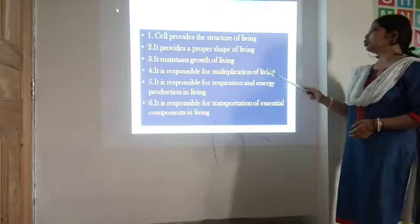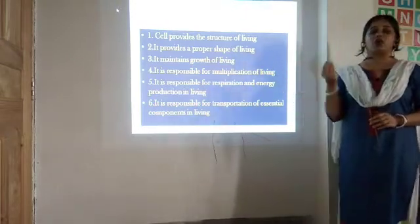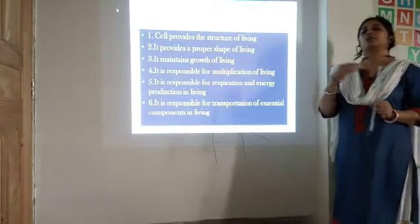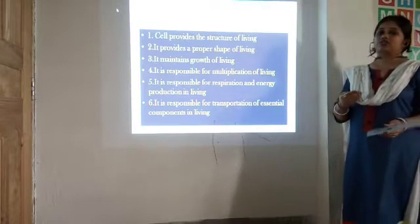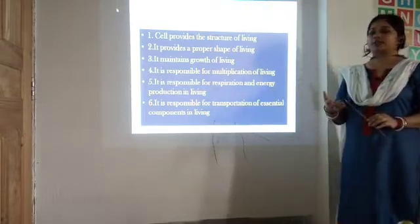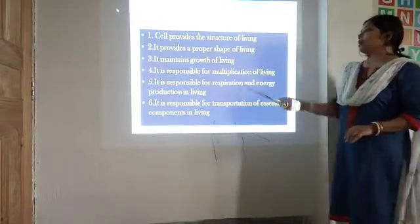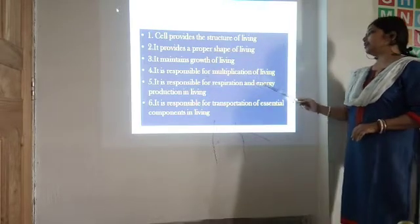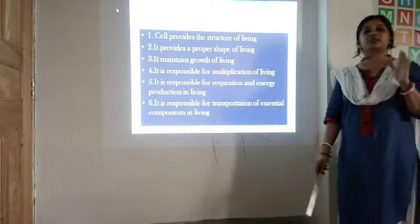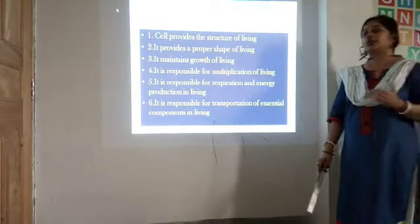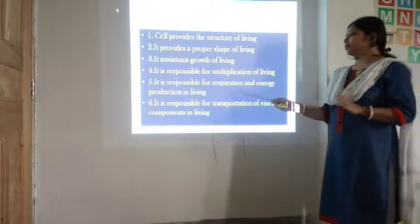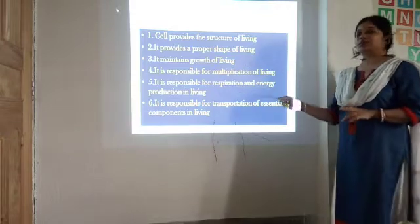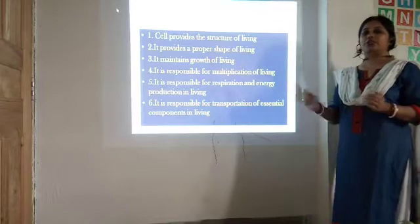The fourth function: the cell is responsible for the multiplication of living organisms. For a single-celled organism, when the cell divides into two, a new organism can be formed — this is cell division and also the reproduction process. The fifth function: the cell is responsible for respiration and energy production. Different small parts called cell organelles are present in the cell. Respiration occurs in an organelle called the mitochondria, and energy production takes place through this process.